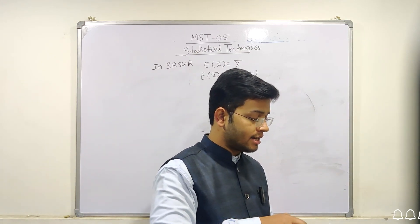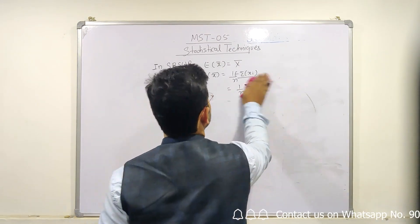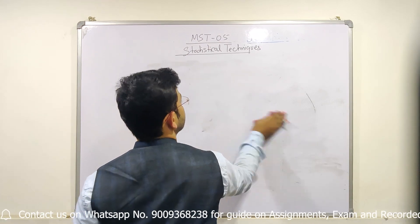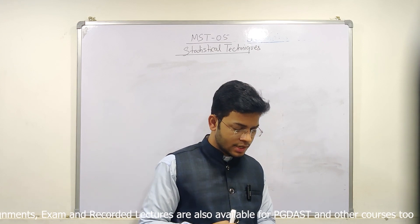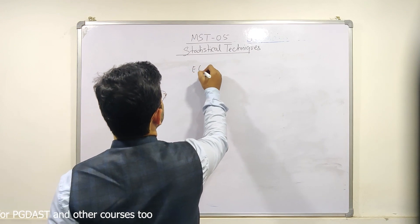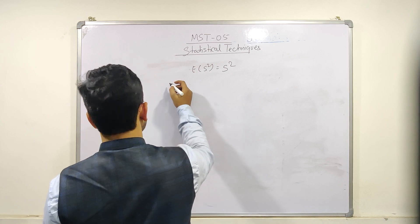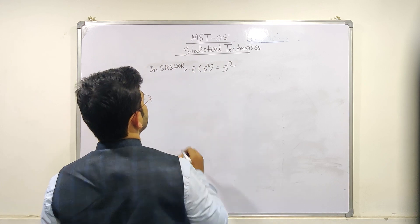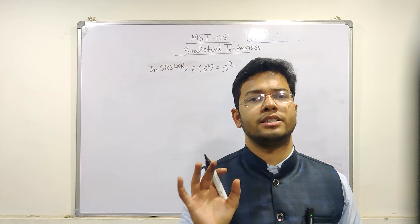We are showing that the sample mean square is equal to the population mean square. In this case of SRSWOR, we have to solve E(s²) — that is, the expected value of s², the sample mean square — and show it equals the population mean square S².